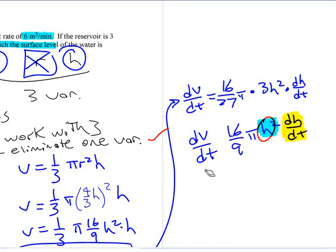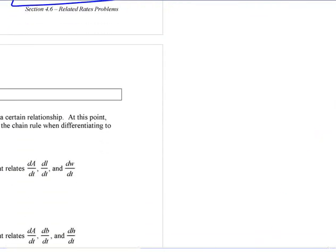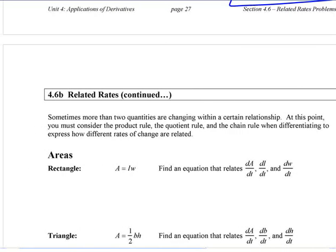Once you have that formula, then it's just subbing in numbers to make sure your units work out. There's kind of a part two to this. Continued. Related rates continued. The only difference here is now we're working with more variables. But I think some of you have already seen how you can start doing that.